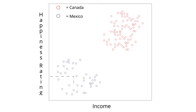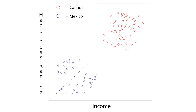The average Canadian makes significantly more money than the average Mexican, so their average happiness ratings start at a higher level in conjunction with their higher income. So Mexicans on average make less money and are less happy, while Canadians on average make more money and are happier. Put these two together, and a positive correlation between money and happiness appears. Therefore, to a certain extent, money does buy happiness.